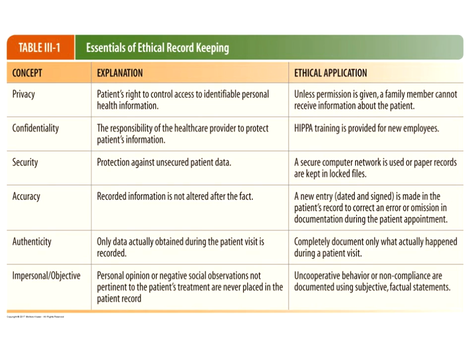Table 3-1 covers ethical record keeping concepts: privacy, confidentiality, security, accuracy, authenticity, and impersonal and objective data. For privacy, the patient has the right to control access to who looks at their health record. We guarantee confidentiality and need to protect against unsecured patient data. Accuracy means unaltered — you can't go back and alter something after you've written it. You can make an addendum, but you can't cross anything out or erase.